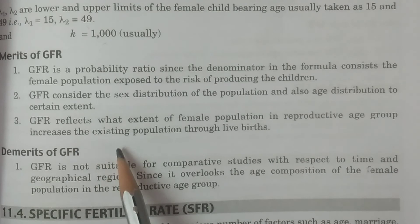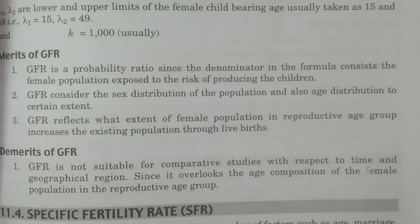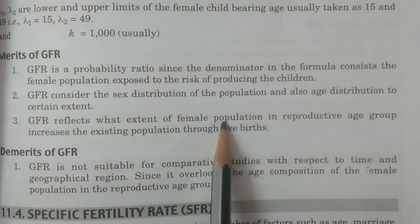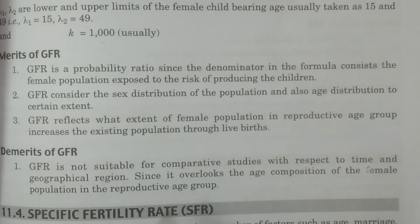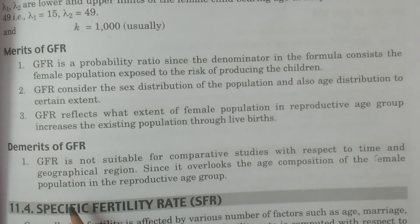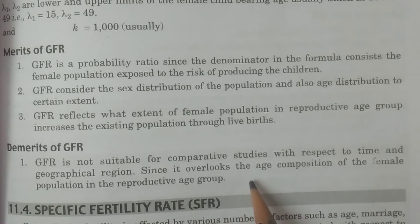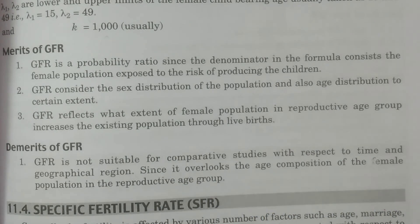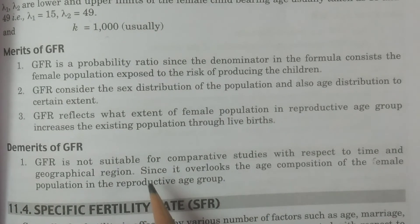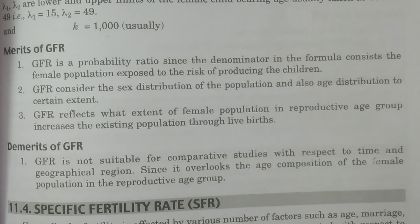Third merit: GFR reflects the extent to which the female population in the reproductive age group increases the existing population through live births. Now the demerit: GFR is not suitable for comparative studies with respect to time and geographical region, since it overlooks the age composition of the female population within the reproductive age group. This is the main disadvantage of GFR.